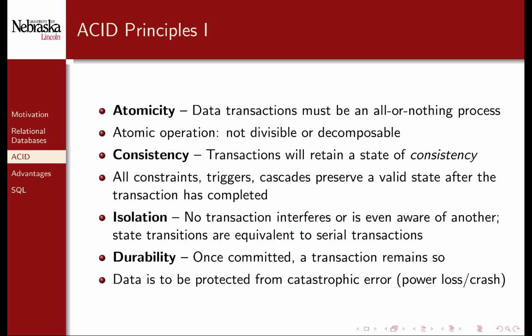Relational database systems also support what are known as the ACID principles. Atomicity refers to the fact that transactions are an all-or-nothing process. If a transaction involves multiple queries to the database and one of those queries fails, then it is as if none of the queries had ever occurred. For example, suppose we attempt to insert three records in a single transaction and the second one fails — perhaps it violates one of the constraints defined in the table. Upon failure, it is as if the first record were never inserted at all. The transaction is successful in its entirety, or not at all.